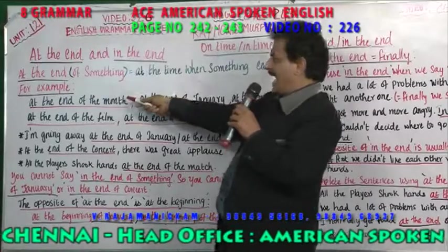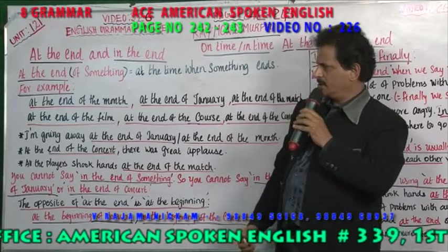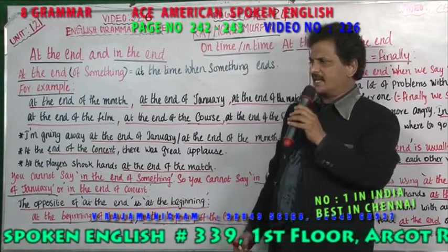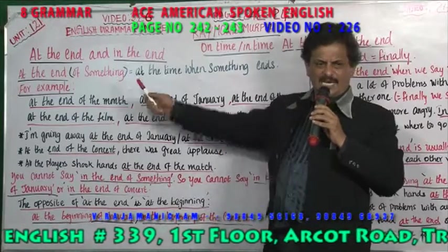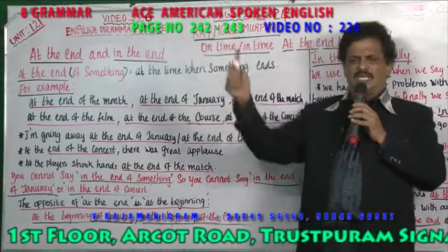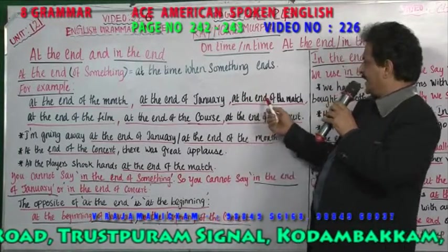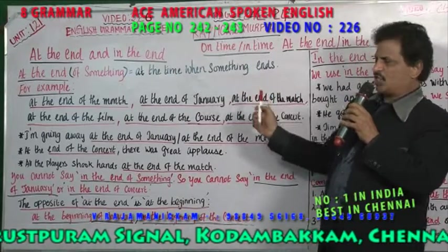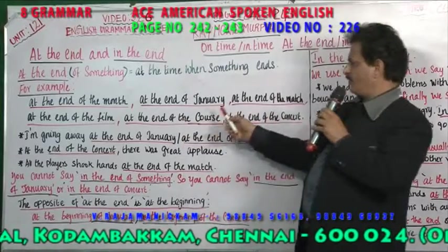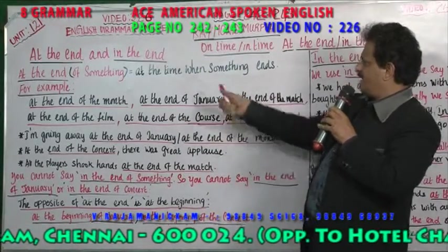What happens at the end of March? The final settlement of accounts at the end of March. At the end of January. At the end of the film. At the end of the course. At the end of the concert. At the time something ends.